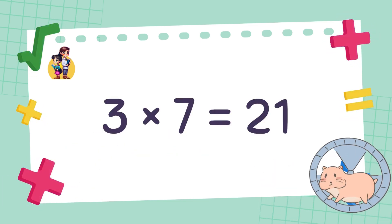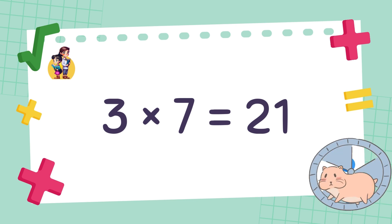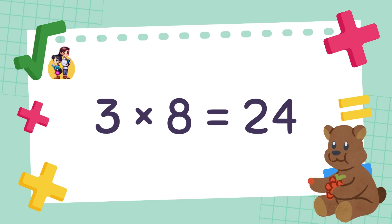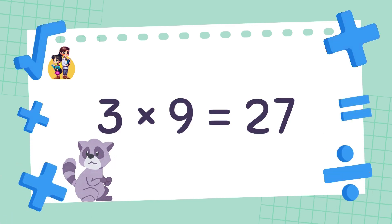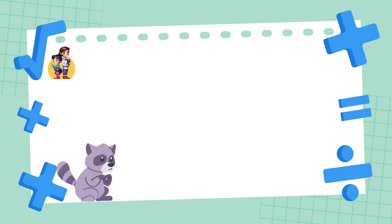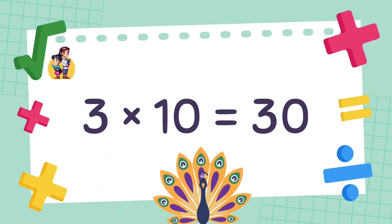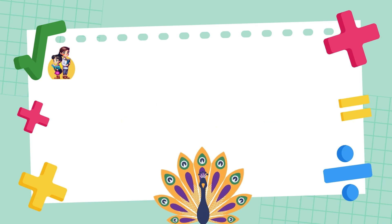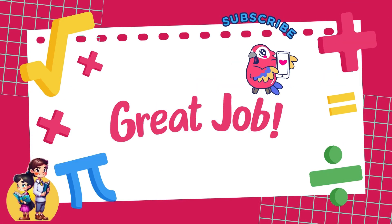3 x 7 is equal to 21. 3 times 8 is equal to 24. 3 times 9 is equal to 27. 3 times 10 is equal to 30. Great job!